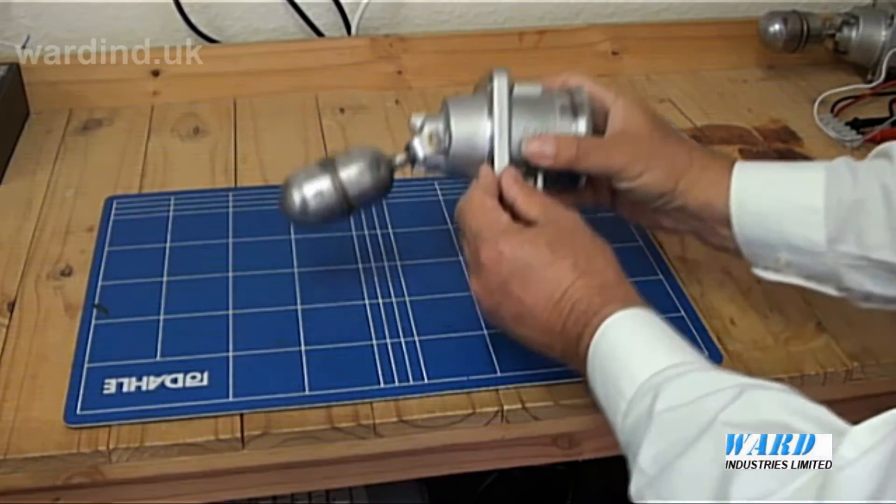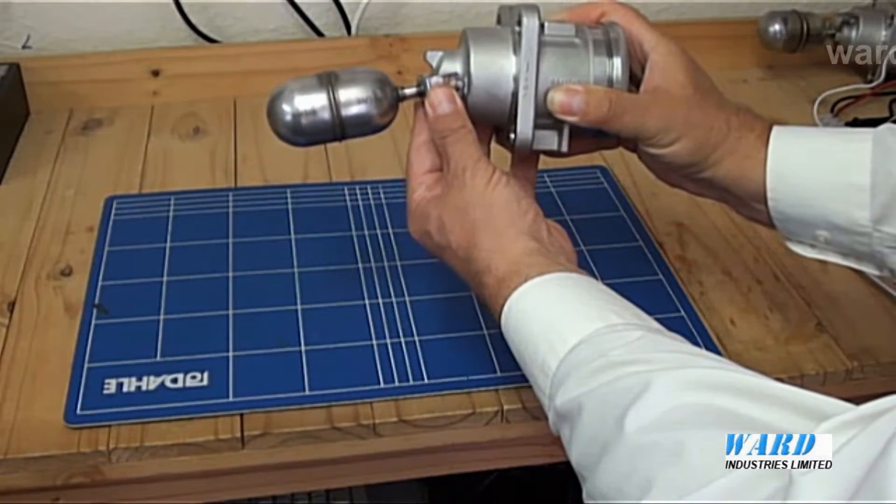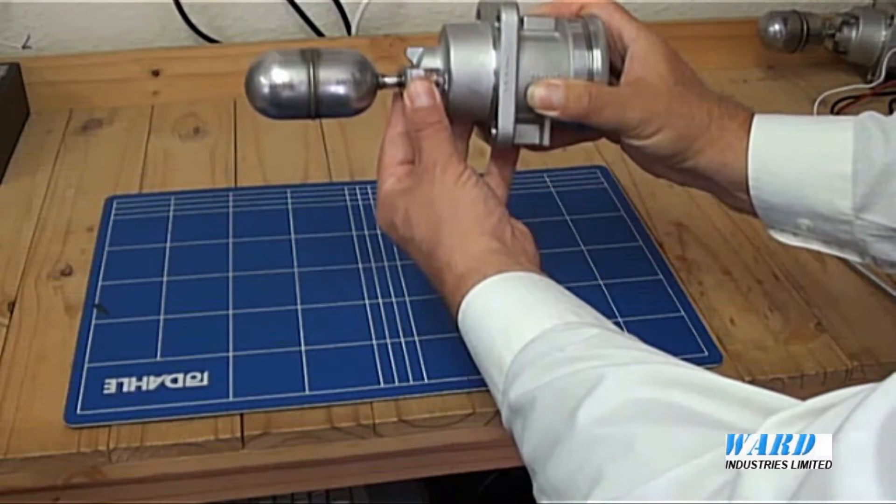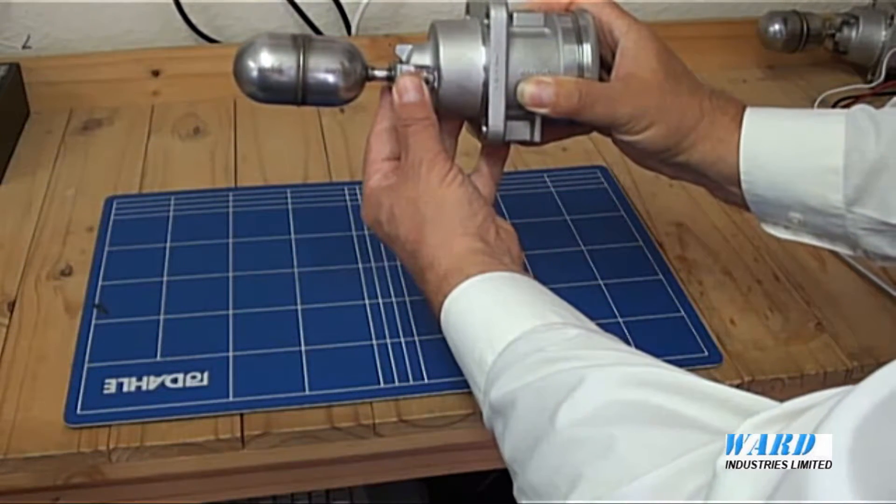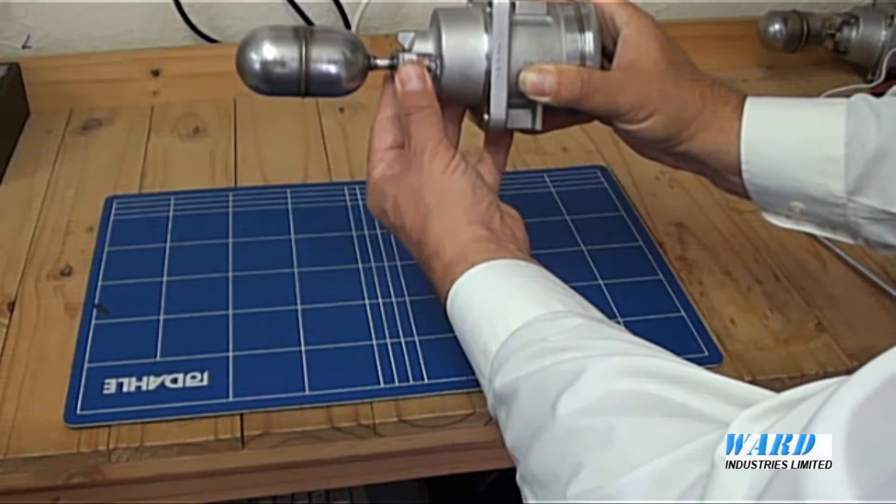As the float moves at the switching point, the magnet in the switch body is repelled, giving snap action of the micro switch contacts. Here you can just hear the switch snapping over.